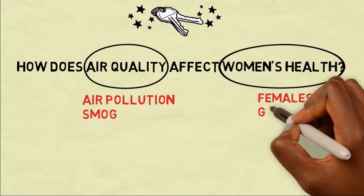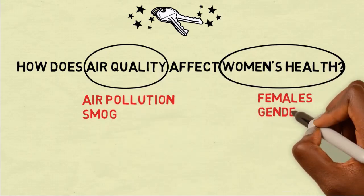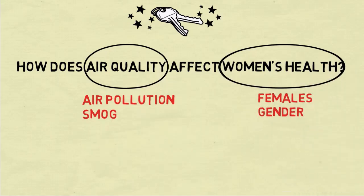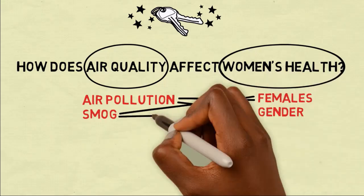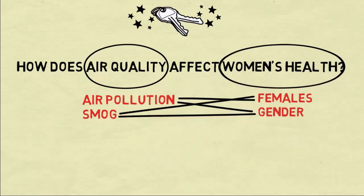For example, air pollution and smog are terms related to air quality, and females and gender might get results related to women. Possible combinations include air pollution and females, air pollution and gender, smog and females, smog and gender — you get the picture.